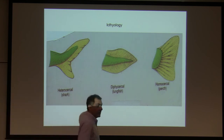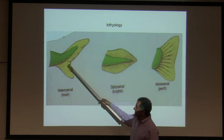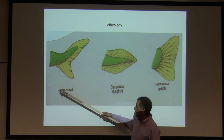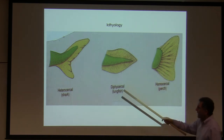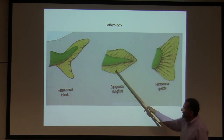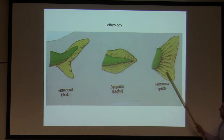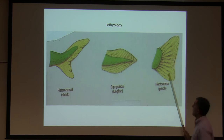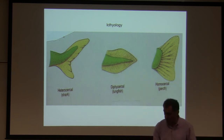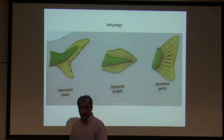There are three different types of caudal fin. Heterocercal means the two branches are not equal — shark is an example of a heterocercal fin. Homocercal means both ends of the caudal fin are equal — like perch, bass, and most fishes you typically see. Diphycercal — like loin fish and lamprey — is the third type.